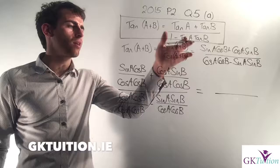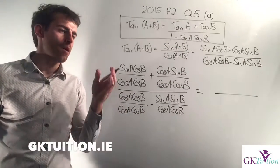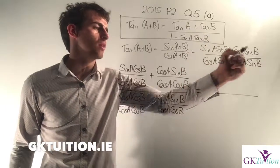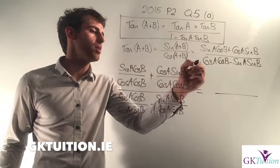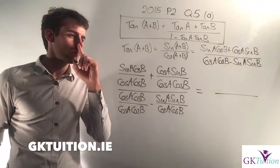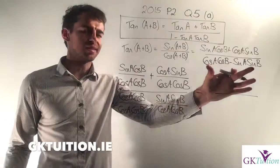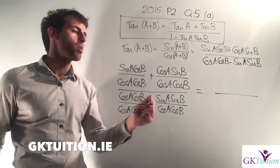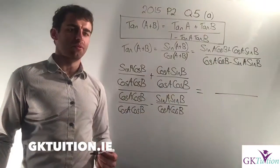Now we can use our compound angle formulas to simplify this. On page 14 it tells me that sin(A+B) can be rewritten like this, and cos(A+B) can be rewritten like this. I think it's this line here where jumping from here to here probably seems like a big jump. But it should be obvious to you.